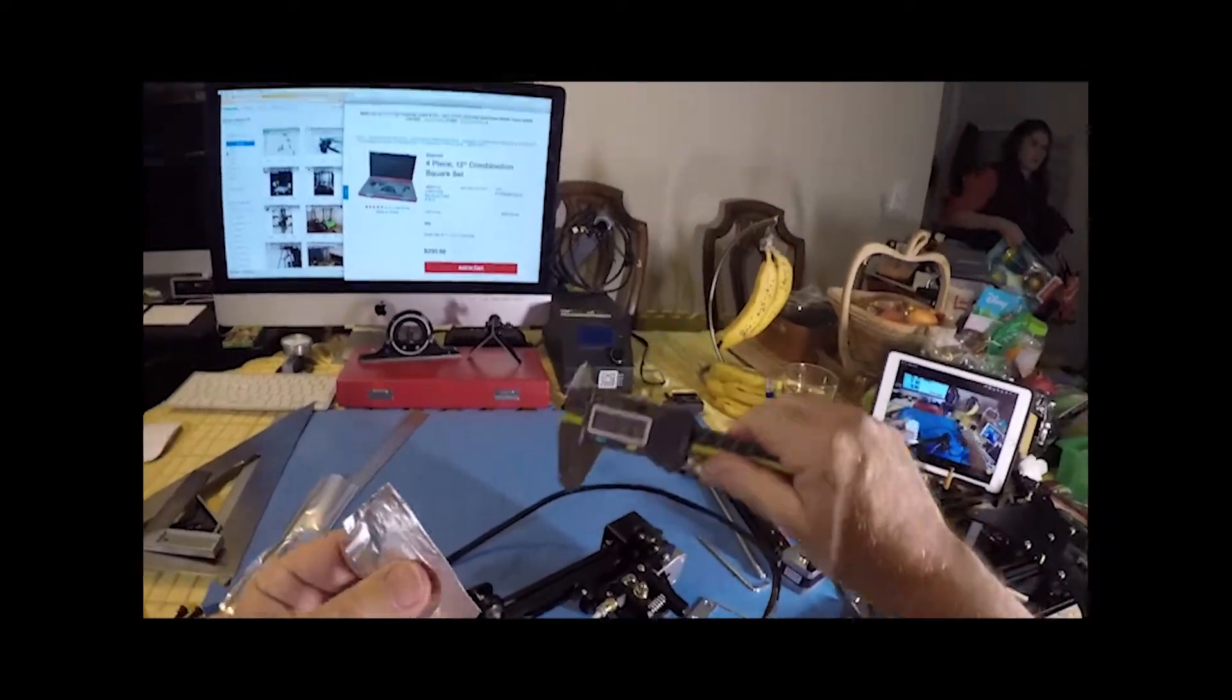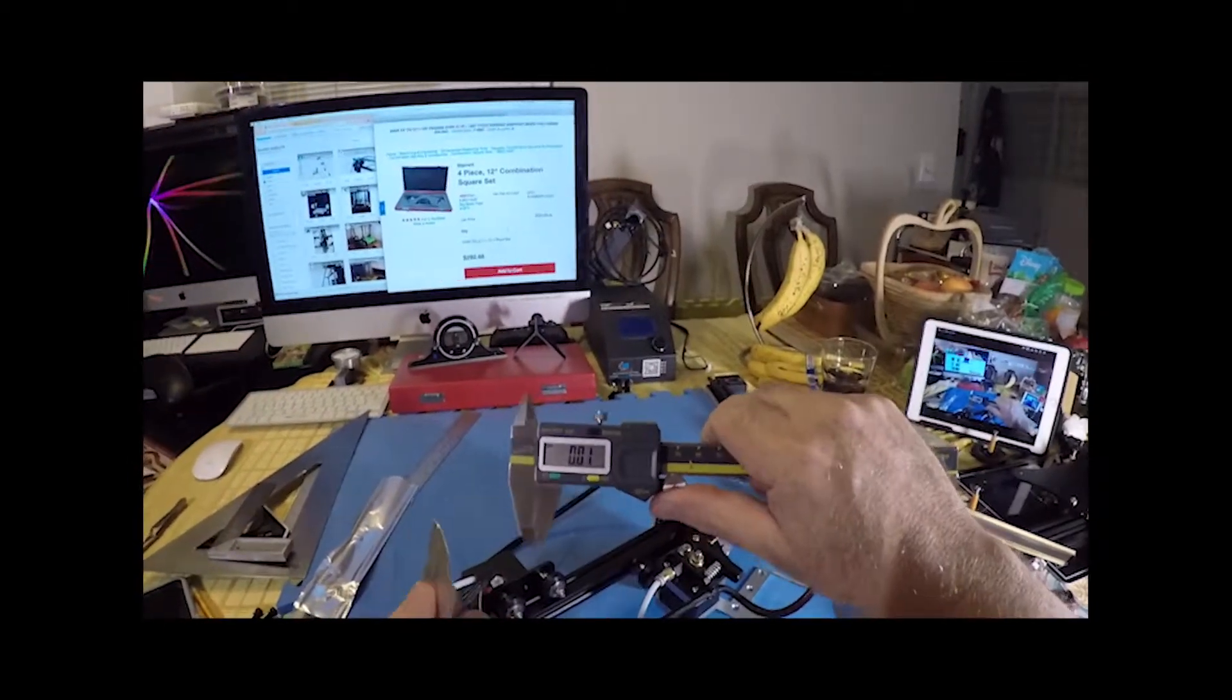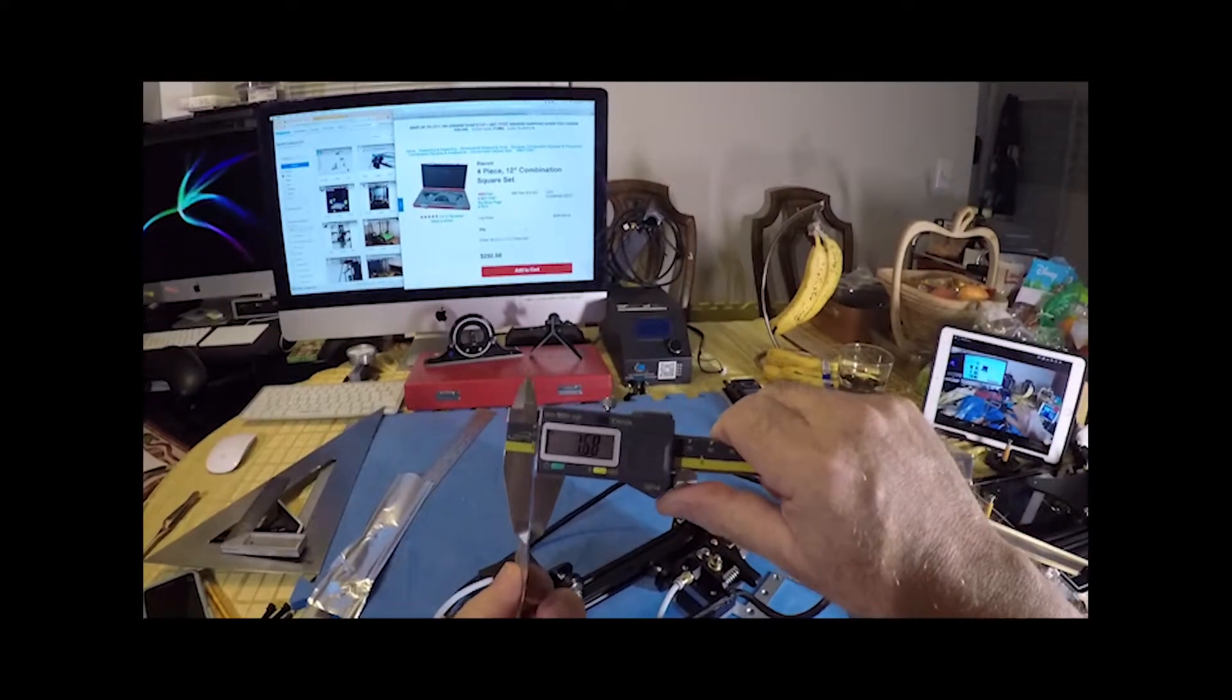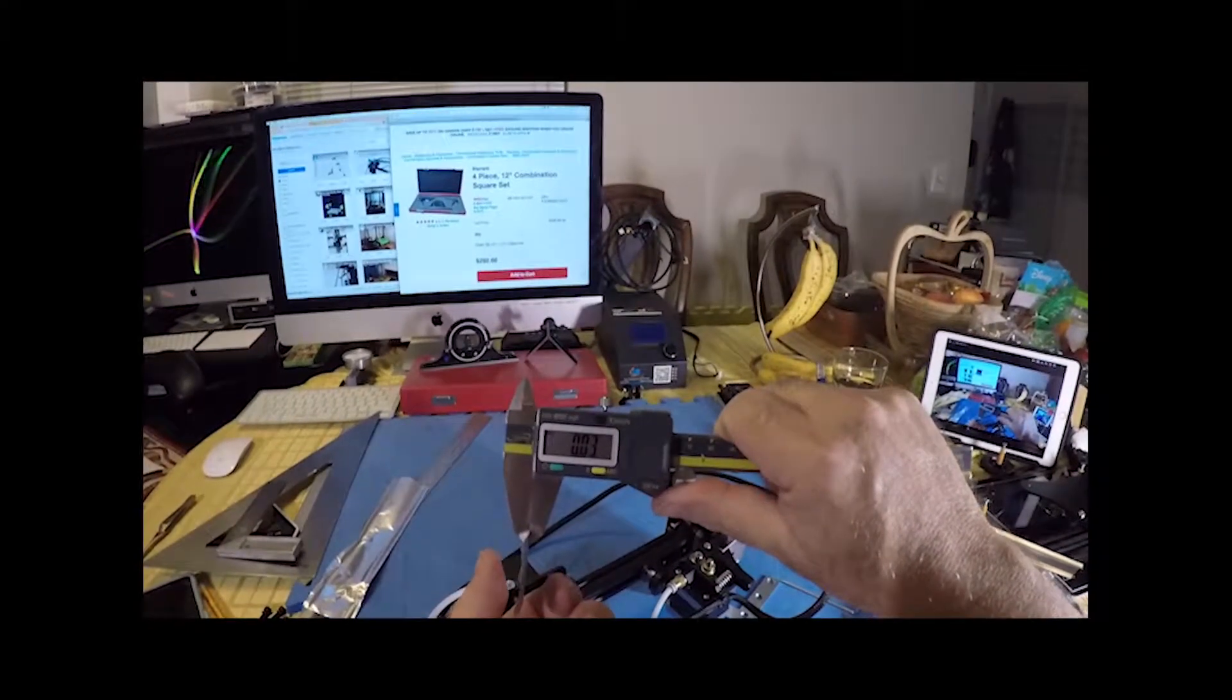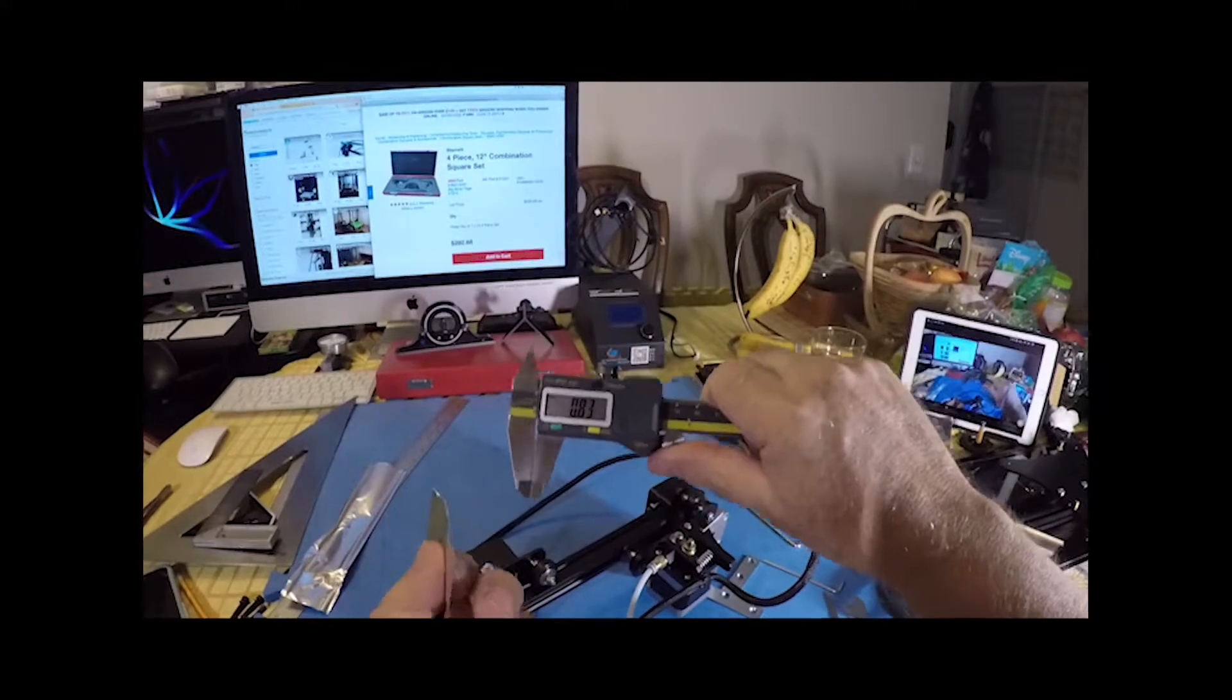This is new aluminum foil and I haven't checked the thickness on it. Let's see what we get here - about 0.03. I'm staying consistent with the other tin foil that I was using.